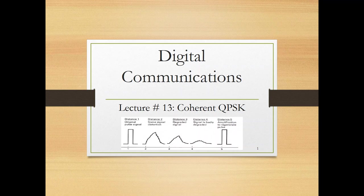In the previous lecture we explained binary phase shift keying: how to generate it, how to demodulate it, how to calculate its bit error rate and average probability, and how to draw its power spectral density. In today's lecture we will do the same for a new type of modulation that instead of using only one basis function uses two basis functions — this is called quadrature phase shift keying.